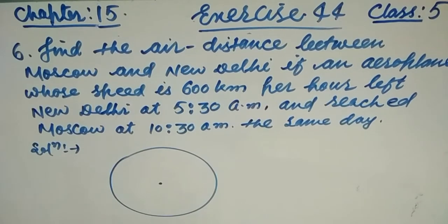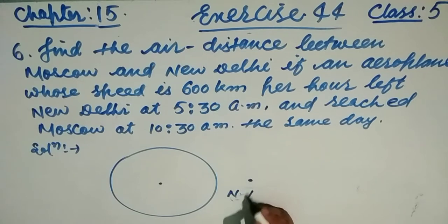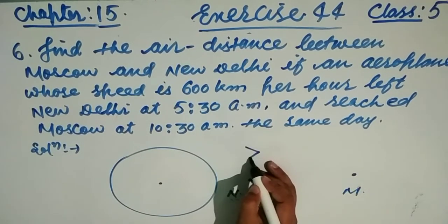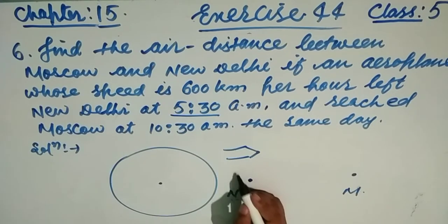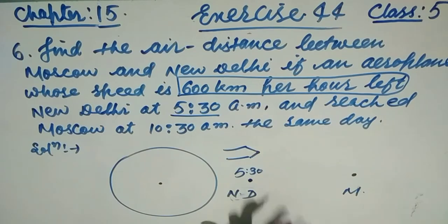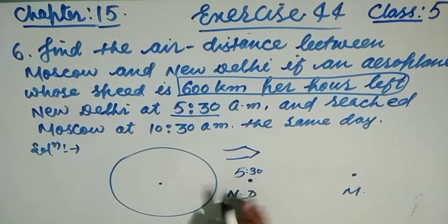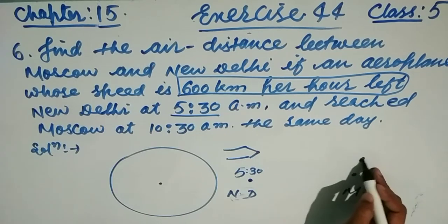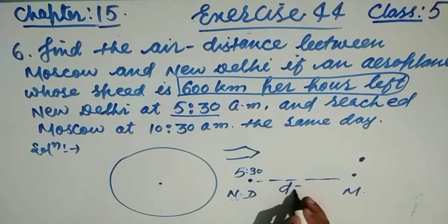We have to find the distance covered in the air. New Delhi is here and Moscow is there; the airplane travels between them. The airplane left New Delhi at 5:30 a.m. The speed is given, but the exact time duration is not directly given — we need to calculate it. The airplane starts from New Delhi at 5:30 and we need to find what distance it covered, let's call it D.